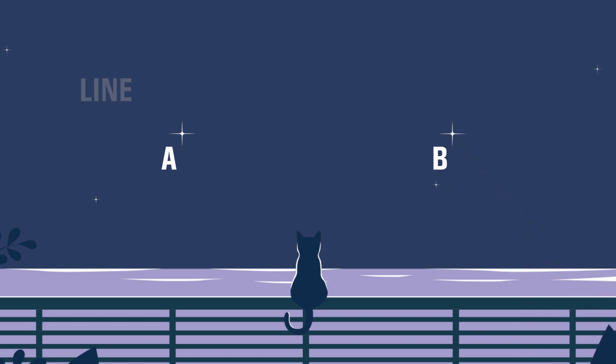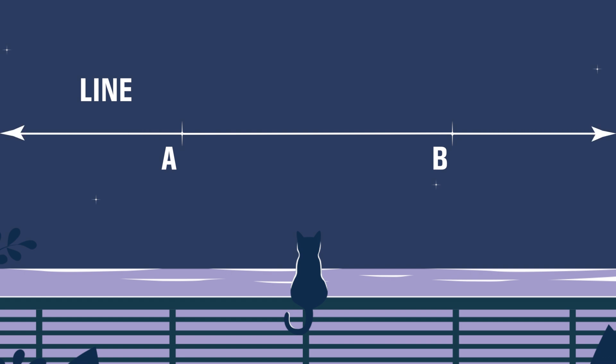A line is a straight path of points that goes on forever in both directions. We can draw a line through AB. Notice that line AB is the same as line BA.